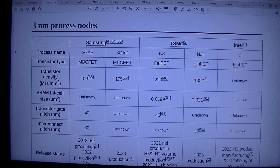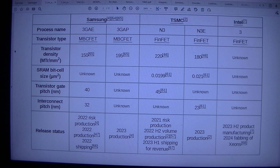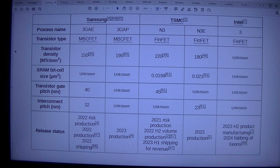Comparing TSMC and Intel 7 process nodes. Process names include 3GAE, 3GAPN, 3N, 3E. Transistor type is MFET or FET across all nodes. Transistor density ranges from 150 to 220 MTr per square millimeter. SIM bit cell size M2 is approximately 0.0199 to 0.021. Transistor gate pitch is around 40 to 45nm, and interconnect pitch is 32nm.